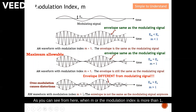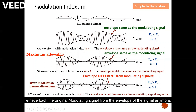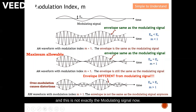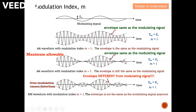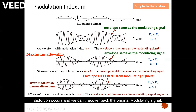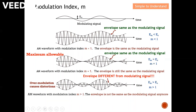When the modulation index m is more than one, distortion or over-modulation actually occurs, and you cannot retrieve the original modulating signal from the envelope anymore. Instead, what you retrieve is an incorrect signal — not exactly the modulating signal. Therefore, this is undesired and must be avoided. In short, the modulation index needs to be greater than zero and less than one.